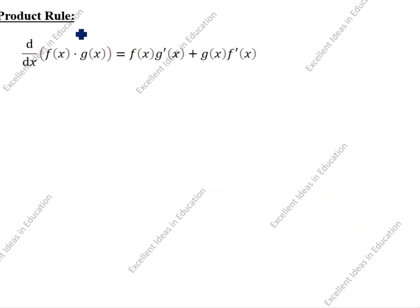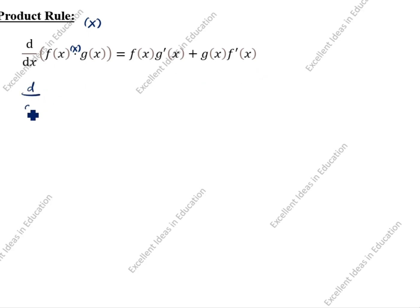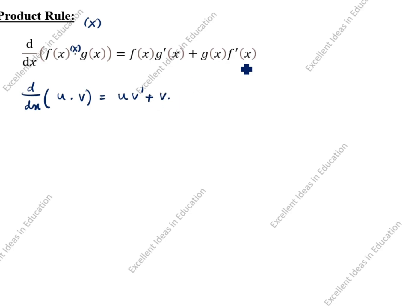Next: product rule. Product rule means multiplication. d/dx of [f(x)·g(x)] = f(x)·g'(x) + g(x)·f'(x). Another method: take f(x) as u and g(x) as v, then d/dx of [u·v] = u·v' + v·u'. This is the formula.